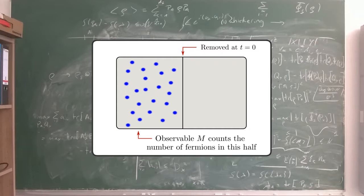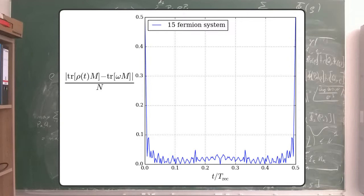By focusing on the observable that measures the number of fermions in the left half of the box, we can ask whether equilibration occurs and how long it takes.